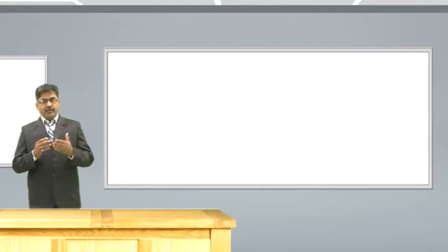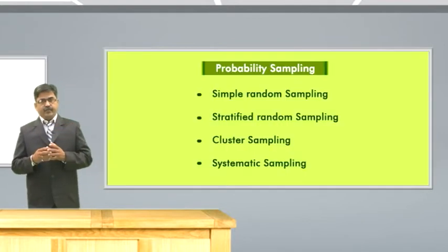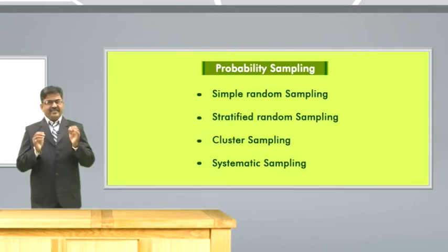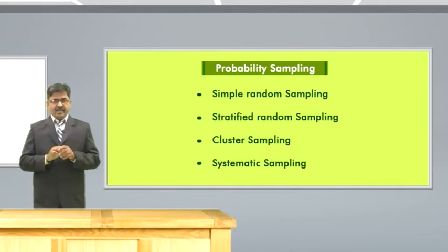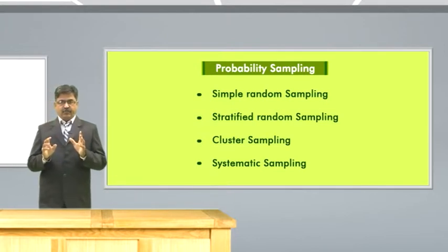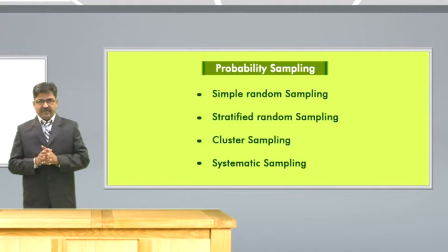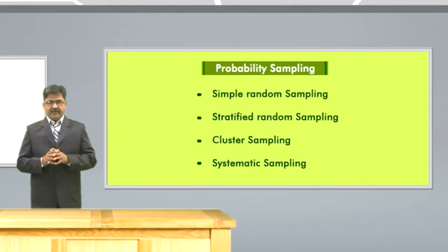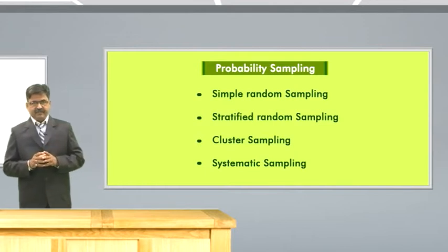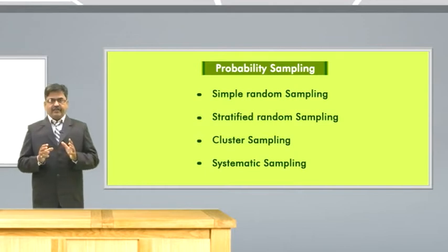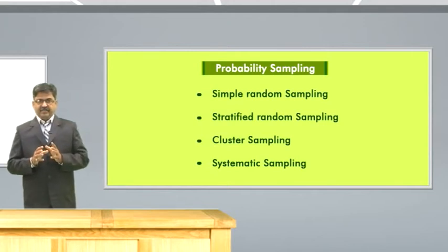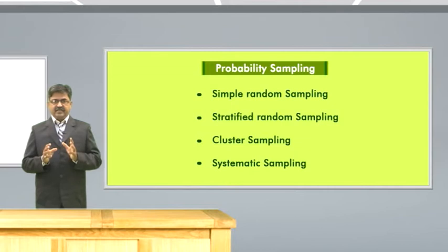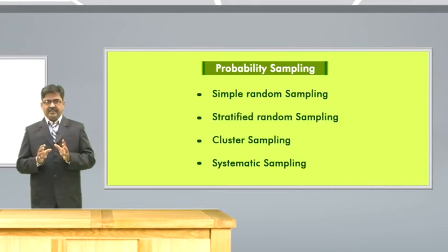Then comes probability sampling. In probability sampling, we know the exact possibility of each individual to be selected in your sample. Basically, there are four types of probability sampling: simple random sampling, stratified random sampling, cluster sampling, and systematic sampling. In case of all types of probability sampling methods, the degree and direction of error can be measured and the statistics that measure this precision of estimation can easily be calculated.